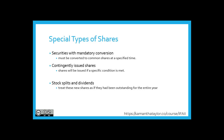Securities with mandatory conversion are items which must be converted to common shares at a specified time; these should be included in WAXO as soon as the securities are issued. Contingently issued shares are shares issued if a specific condition is met; these should be included in WAXO as soon as the condition is met, even if not yet issued. For stock splits and dividends, treat these new shares as if they had been outstanding for the entire year when calculating WAXO.